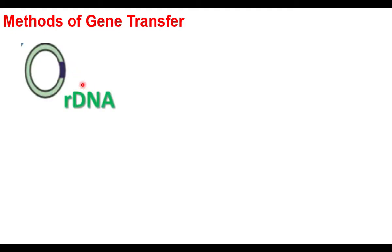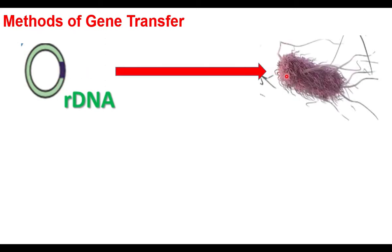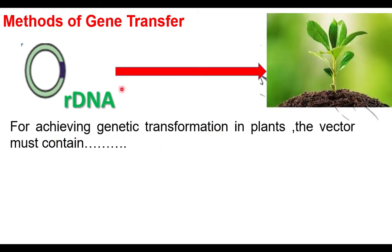There are different methods of gene transfer. A vector carries the foreign DNA — the gene of interest — into the host cell. For achieving genetic transformation in plants, the vector must contain the gene of interest. Controlling sequences — promoter and terminator — should also be present in the vector. The promoter is a DNA sequence that starts mRNA synthesis; the terminator ends it. Without these, mRNA will not be produced.